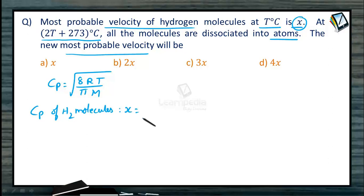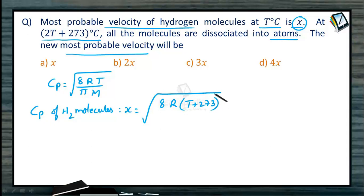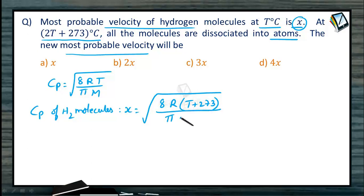So x = √(8R · (t + 273) / (π · 2)). We write t plus 273 because we always substitute temperature in the Kelvin scale. Even though it is given as capital T, it does not mean the temperature is in Kelvin — it is t degree centigrade, which means t plus 273 Kelvin. The molecular mass of hydrogen is equal to 2.